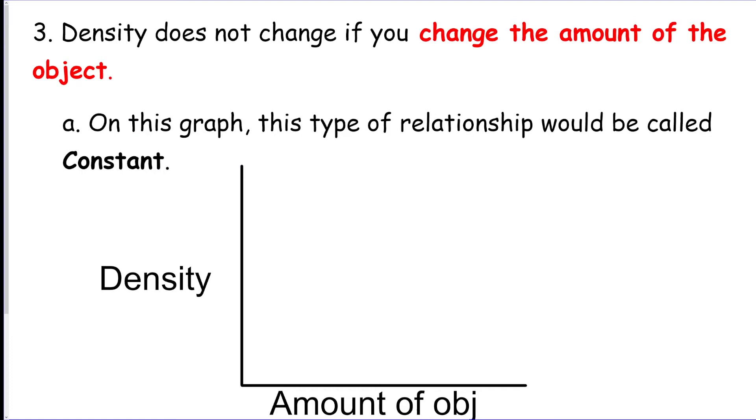Now the last one we're going to talk about is the amount of the object. This one's interesting because if I had, let's say, 10 grams of mass of an object and that had a volume of 5 centimeters cubed, the density formula is mass over volume.